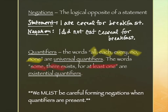Negations with quantifiers are not quite as easy as negations without them. Consider the statement "everyone believes that murder is wrong" — what does it take for that to be false? One person. It takes exactly one person who says "I don't believe that."